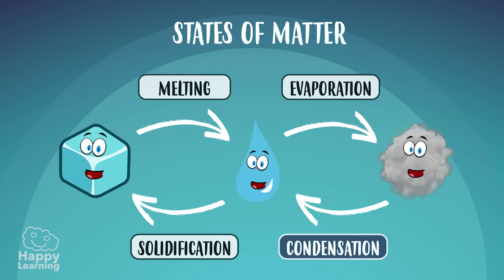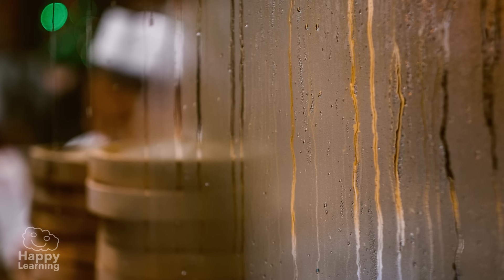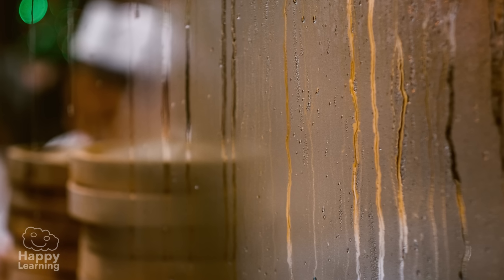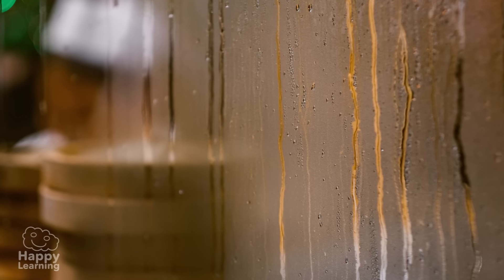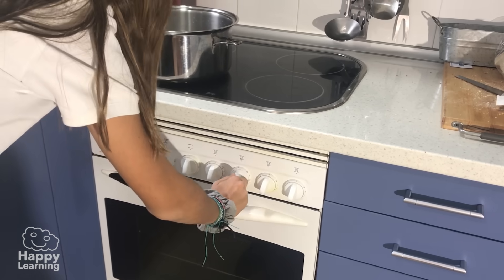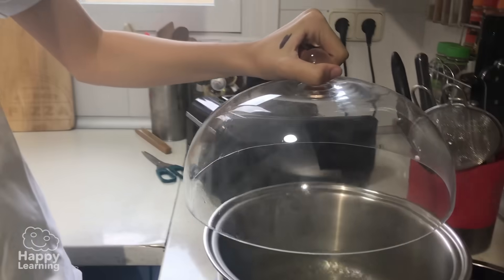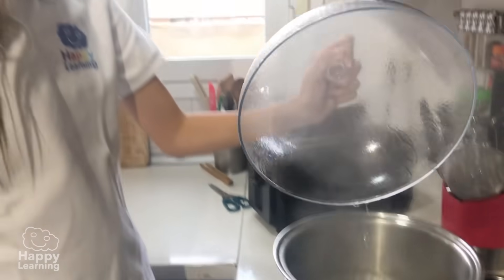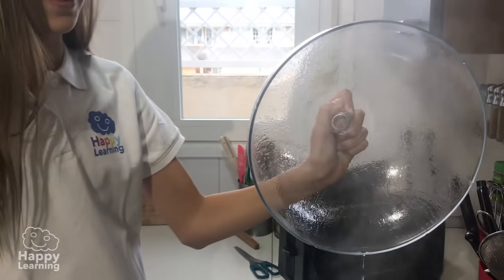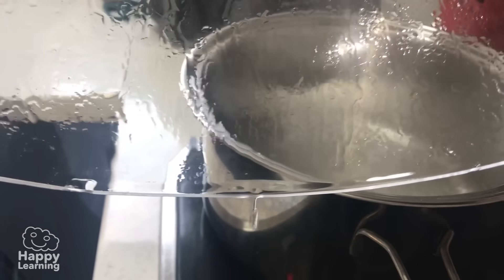Condensation is a step from gas to liquid, and happens when matter in gas state is cooled. Have you ever noticed that when we get steamy windows or mirrors, water droplets appear? It's produced when water vapor touches a cold surface — in that moment, water vapor cools and turns into liquid.